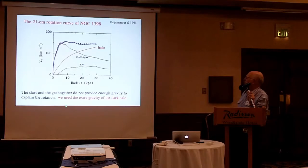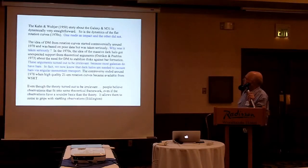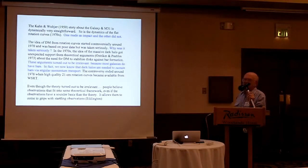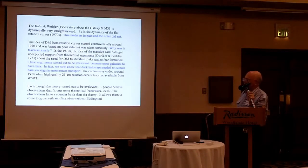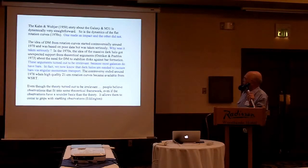By now, hundreds of galaxies have been observed in this way, and it is quite clear that stars and gas together don't provide enough gravity to explain the rotation — you need the extra gravity of a dark halo. The Kahn-Woltjer story and the dynamics of flat rotation curves are both dynamically straightforward, but one made an impact and the other did not. The idea of dark matter from rotation curves started controversially around the 1970s — this is a typical paradigm change, controversial at first but taken seriously, as Scott Tremaine has discussed.